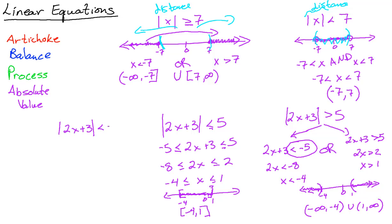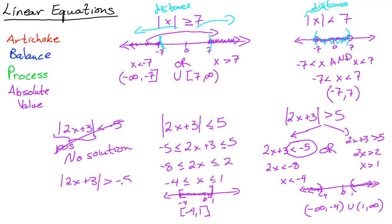Before we leave this, note two special cases. If you have |2x + 3| < −5 — a positive number is never less than −5 — that's no solution without even working the problem. But if you have |2x + 3| > −5 — a positive is always bigger than a negative — then x is all real numbers, no matter what you put in. And that's linear equations.